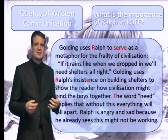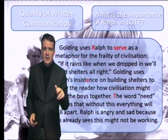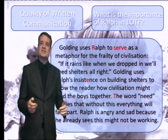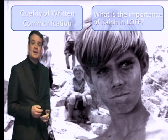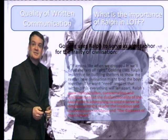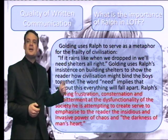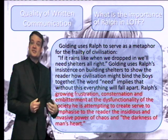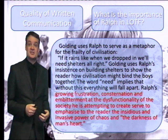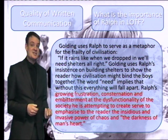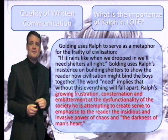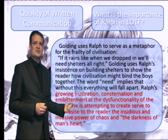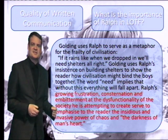The final sentence — 'Ralph is angry and sad because he already sees this might not be working' — the point is good, however the way it's expressed lacks sophistication. So we're going to up-level that vocabulary a little bit, and it ends up looking like this: 'Ralph's growing frustration, consternation and embitterment that the dysfunctionality of the society is attempting to create serve to emphasize to the reader the insidious and invasive power of chaos and the darkness of man's heart.'